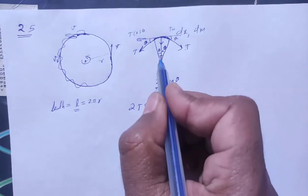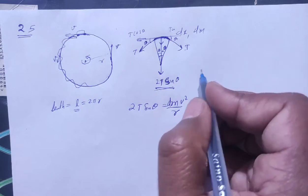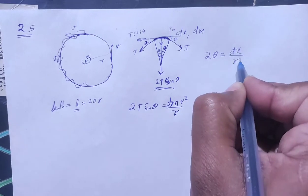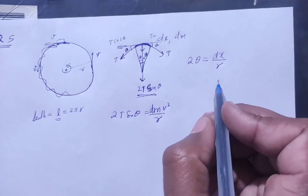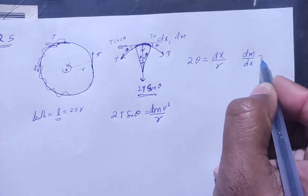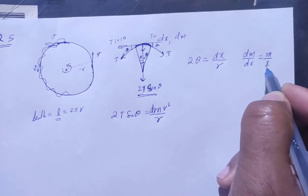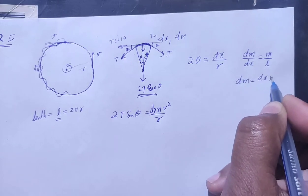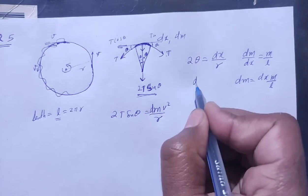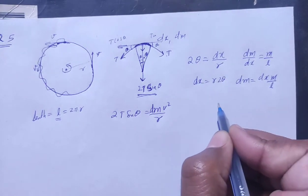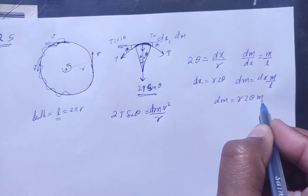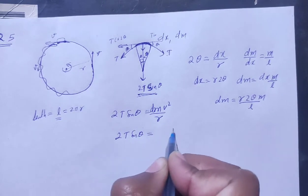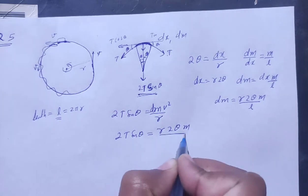We have 2T sinθ equal to dm·v²/r. Now for dm: if the total angle is 2θ, the arc length dx equals r·2θ, and dm/dx equals m/l (total mass upon total length). So dm equals (m/l)·dx, and dx equals r·2θ. Therefore 2T sinθ equals (m/l)·r·2θ·v²/r.